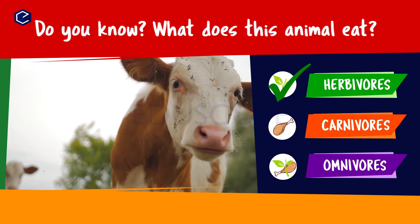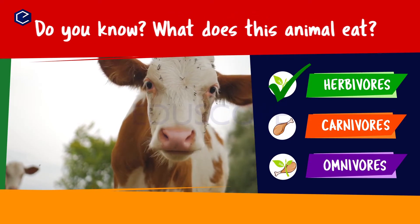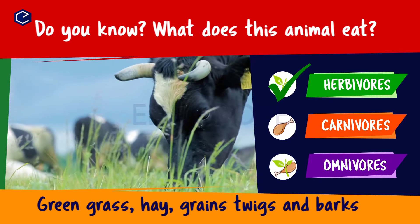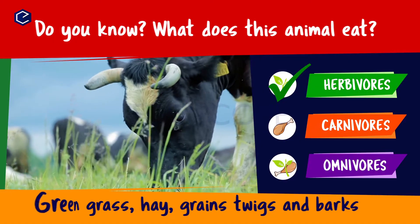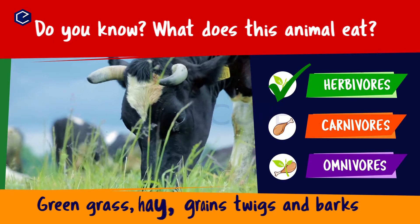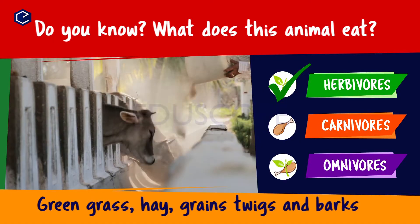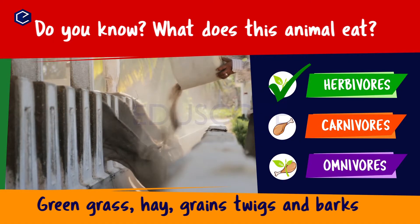Do you know what this animal eats? A cow eats green grass, hay, grains, twigs and barks.